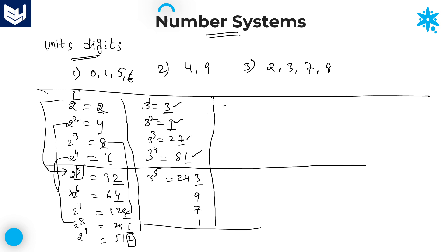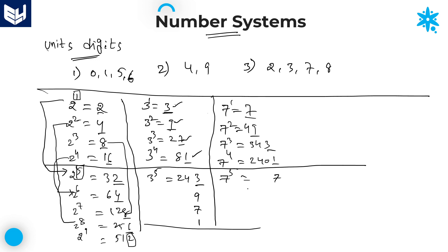Now let me check for 7. 7^1 = 7, 7^2 = 49, 7^3 = 343 — units place not yet repeated. For 7^4, even if you don't know the full value, just track the units place: 3 × 7 = 21, units place is 1. Then 1 × 7 = 7, which repeats after 4 cycles. The same cycle of 7, 9, 3, 1 repeats after every 4 cycles. So if any number ends with 7, the possible units place values are 7, 9, 3, or 1.